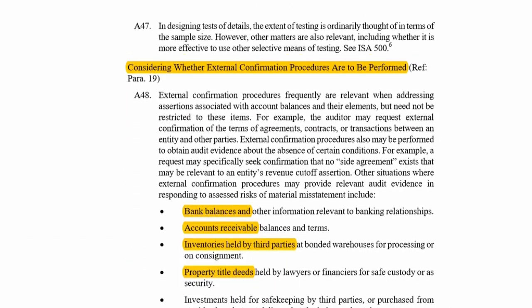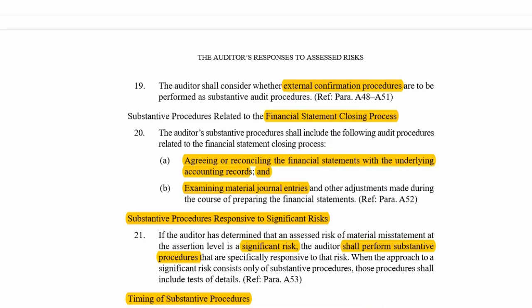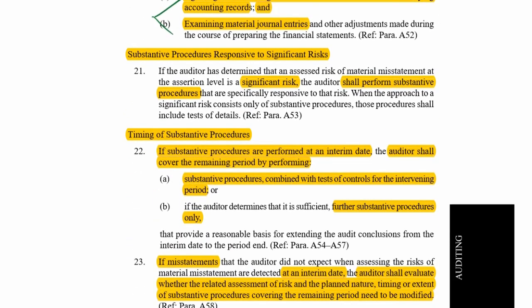Consider whether external confirmations are acceptable or required — the standard provides examples. For your financial statement closing process in terms of substantive procedures: reconciling the financial statements to the accounting records and examining journal entries. If there is a significant risk, just as with controls, you must perform substantive procedures in the current year — you cannot bypass this rule. So if developing an audit plan for an account balance or class of transaction carrying a significant risk and you want to test controls, you will use a combined approach.